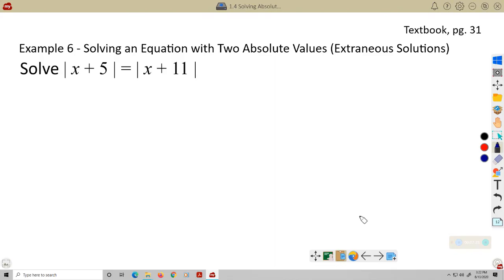Example 6. Solving an equation with two absolute values, and again, extraneous solutions. So we're going to do the same thing. We'll set the left side up here as X plus 5, and that's going to be equal to X plus 11. In the negative case, X plus 5 is equal to negative X minus 11. Everything is the opposite.